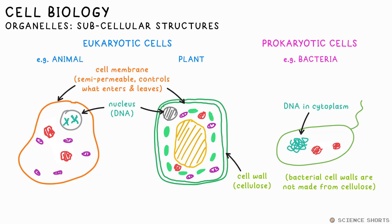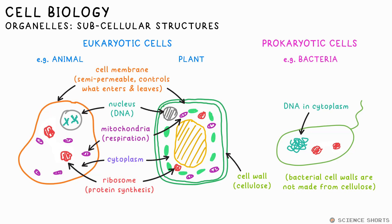Bacteria also have a cell wall, but it's not made of cellulose. Cytoplasm is the liquid that makes up the cell in which most chemical reactions take place. Mitochondria is the site of respiration — that's where energy is released for the cell to function. Ribosomes are the site of protein synthesis, where amino acids are assembled into proteins.